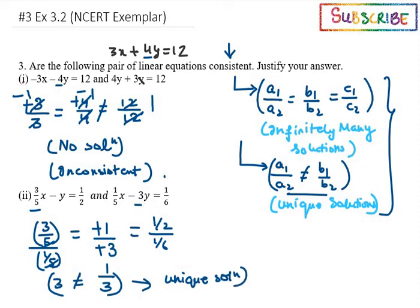a1 over a2 is not equivalent to b1 over b2. Then it is a type of unique solution, and if it is unique solution, then it is consistent. The second one is consistent. Now moving on to the third part.